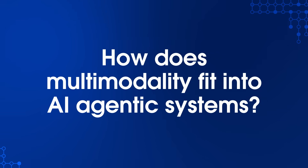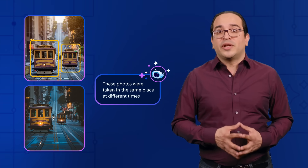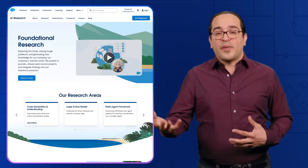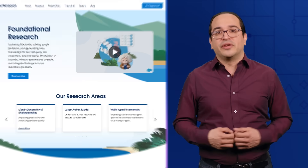So how does multi-modality fit into AI agentic systems? By integrating multi-modal AI capabilities into the AI agent framework, we can effectively enable agents to interact with more types of data. For example, a multi-modal agent could analyze an image and reason about its content, like counting objects or identifying patterns across multiple images. A multi-modal agent could also interact with a web page visually — reading text, clicking buttons, and filling out forms in real time.